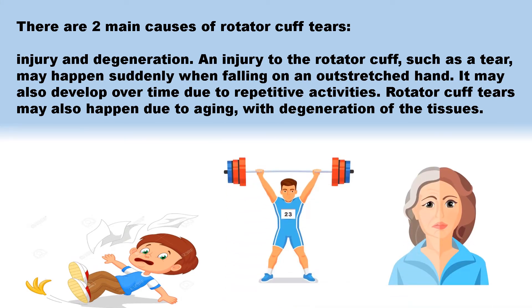There are two main causes of rotator cuff tears: injury and degeneration. An injury to the rotator cuff, such as a tear, may happen suddenly when falling on an outstretched hand. It may also develop over time due to repetitive activities. Rotator cuff tears may also happen due to aging, with degeneration of the tissues.